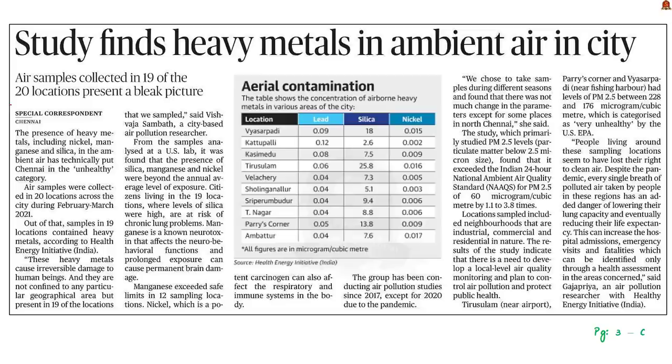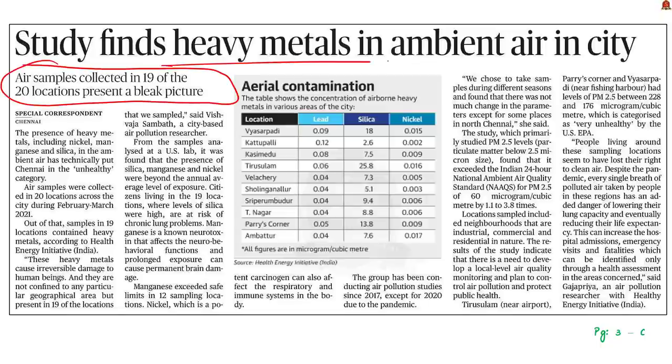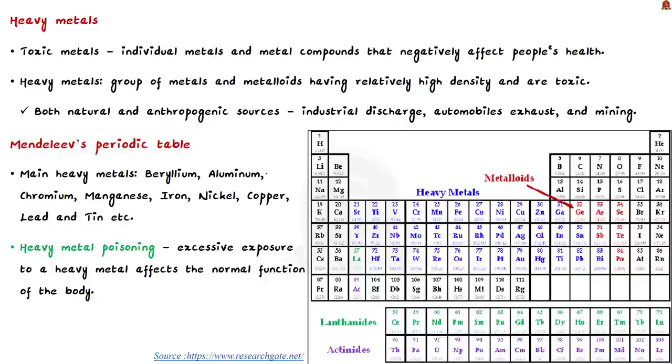Now this discussion is based on this news article which reports a study stating that air samples collected from Chennai has presence of heavy metals such as nickel, manganese and silica. The amount of these metals were beyond the annual average level of exposure. Let us first understand about heavy metals in brief and their health implications. Heavy metals are toxic metals. These are individual metals and metal compounds that negatively affect people's health. Toxic metals includes heavy metals but that does not mean all heavy metals are toxic metals.